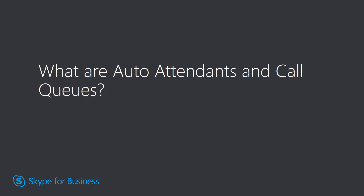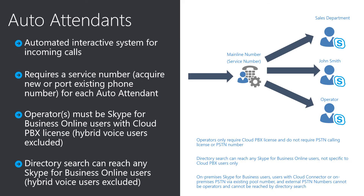Let's talk about auto-attendance and call queues briefly in the context of the SOF journey. Auto-attendance provides an organization with an automated voice response system to handle incoming calls. Typically, it serves the office mainline number, provides callers with options to reach specific teams or groups within the organization, an option to reach individuals through directory search, and an option to speak to the operator. Auto-attendance requires a service number that you need to acquire prior to implementation. For office mainline numbers, unless there is a compelling event to issue a new phone number — such as office moves — the requirement is often to maintain the existing phone number for auto-attendance, which means you need to plan for number porting from the existing service provider to Skype for Business Online.